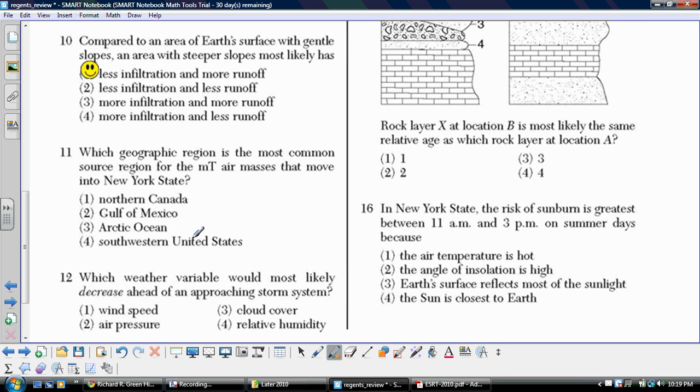Number eleven. Geographic region, most common source region for maritime tropical, the MT air masses that move into New York State. This maritime, over water, tropical meaning warm. The water is going to come from the Gulf of Mexico, and we know it's a tropical region in those parts. So there's your warm, moist air mass.